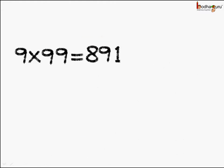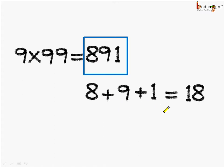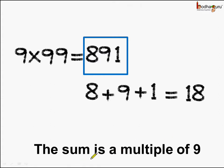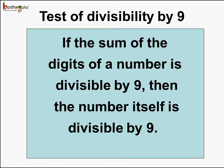Now let's take a larger number: 9 multiplied by 99 is equal to 891. If we add up all the digits, 8 plus 9 plus 1 equals 18, and we know 18 is divisible by 9. So we see the sum of the digits of a given number is a multiple of 9 when it is divisible by 9. The rule: if the sum of the digits of a number is divisible by 9, then the number itself is divisible by 9.